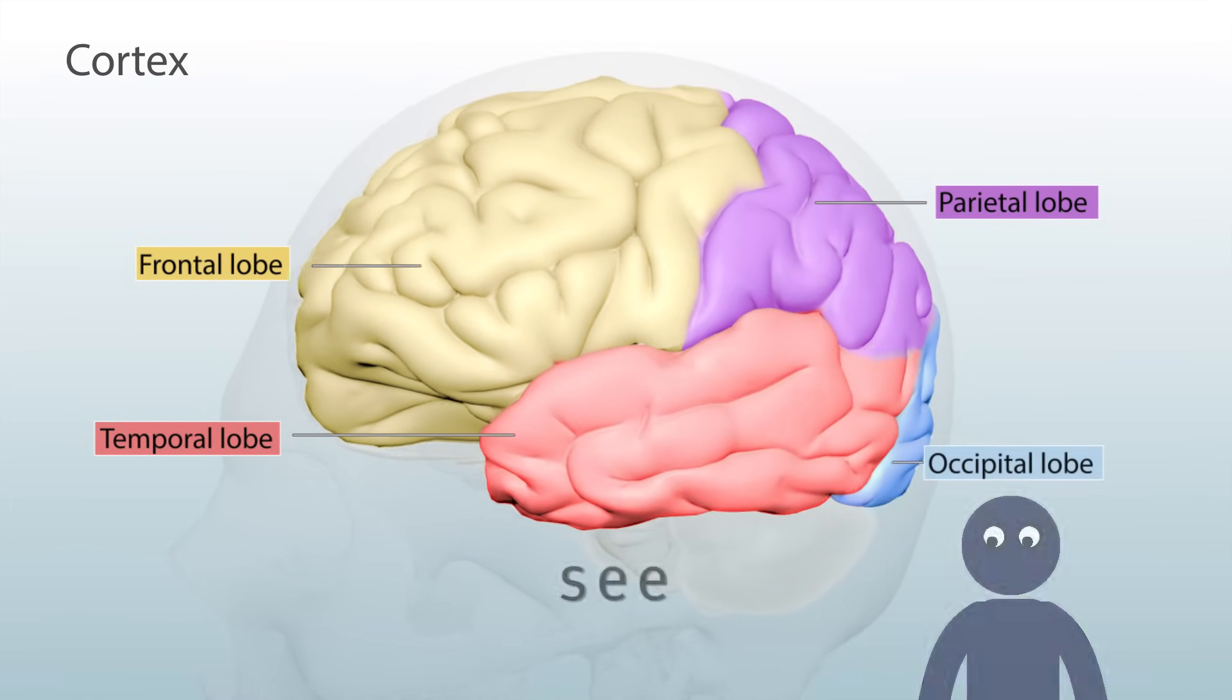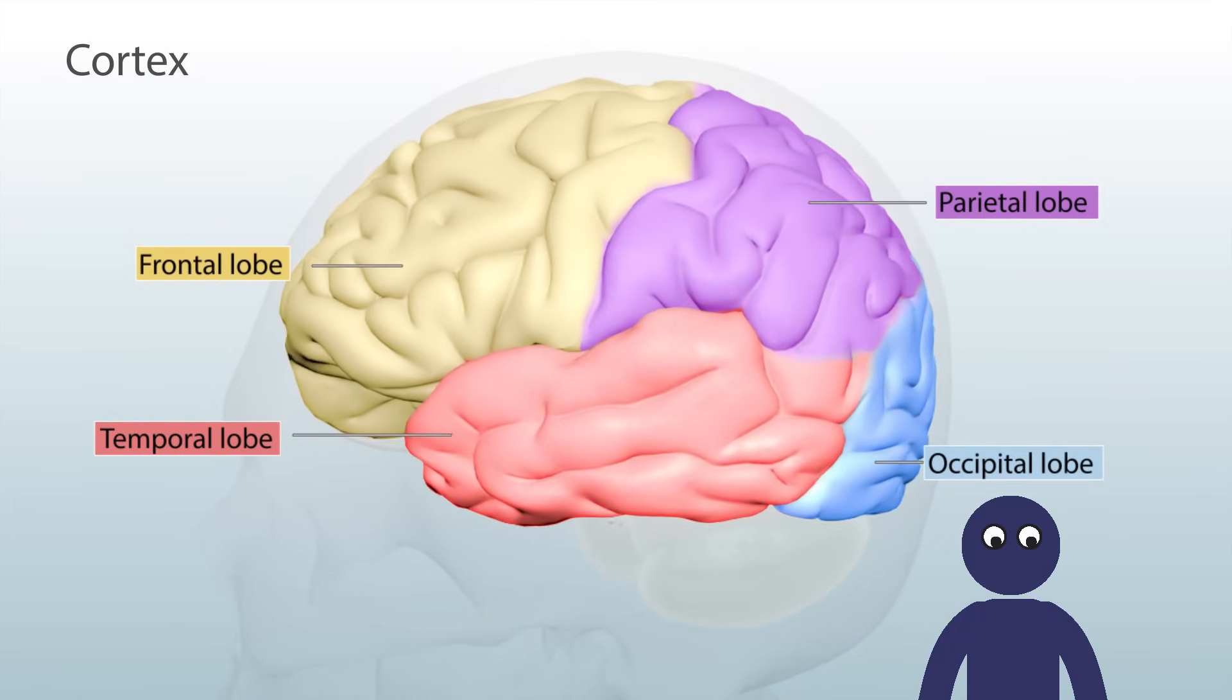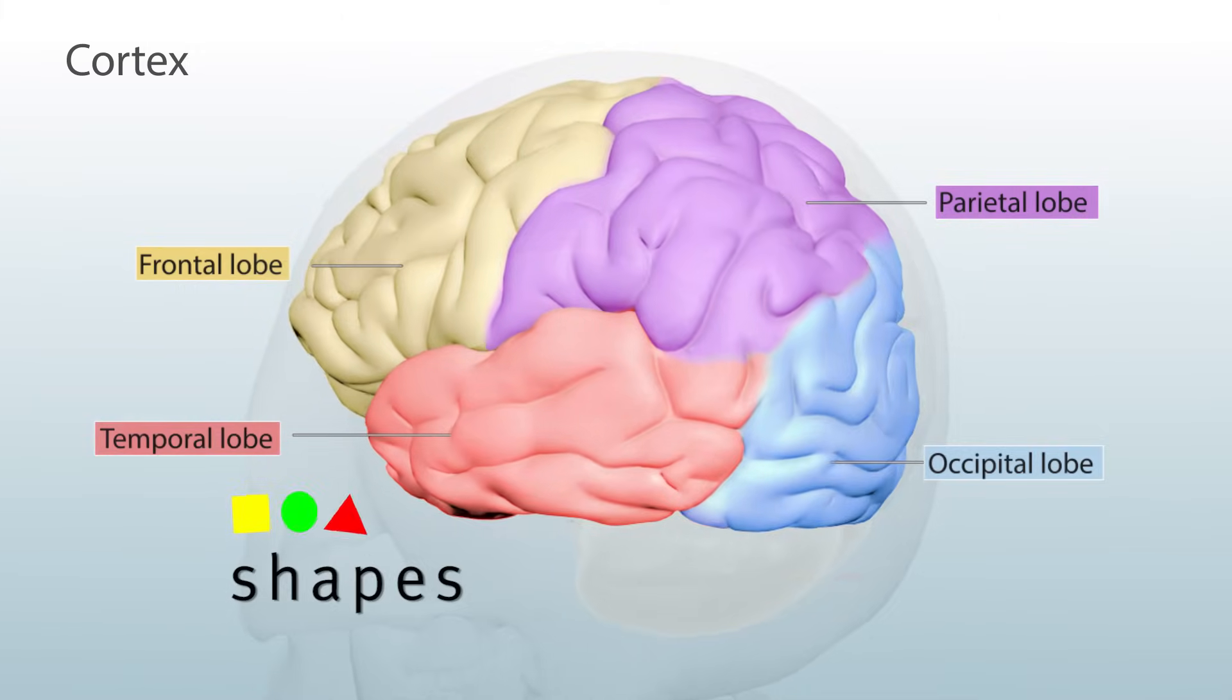The occipital lobe helps your eyes see, including recognition of shapes and colors.